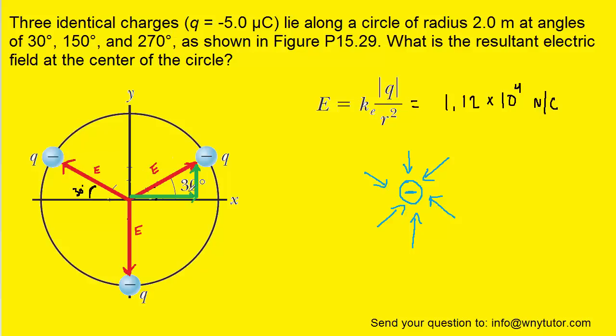The x component is adjacent to that 30 degree angle, so the magnitude of it will be E times the cosine of 30. And then the y component will be opposite to the 30 degree angle, and therefore it will be E times the sine of 30.